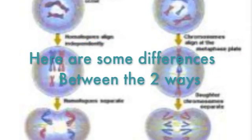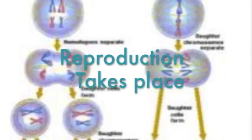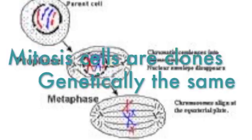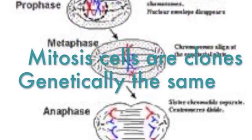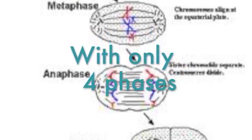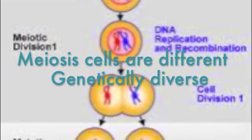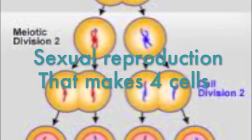Here are some differences between the two ways reproduction takes place. Mitosis cells are genetically the same and produce only two cells. Meiosis cells are genetically diverse — that's the type of reproduction that makes four cells.